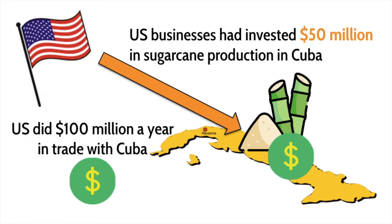The United States has a vested interest in Cuba, not just in terms of seeing democracy and freedom spread, but because of money that's been invested. U.S. business owners had invested about $50 million in sugarcane production in Cuba — a lot of money for 1898. Overall, the United States did about $100 million a year in trade with Cuba. If the fighting continues, that's going to disrupt American business, and if Spain reinstates harsh control over Cuba, America might lose those investments and trade. So America has a financial reason for supporting Cuban independence.